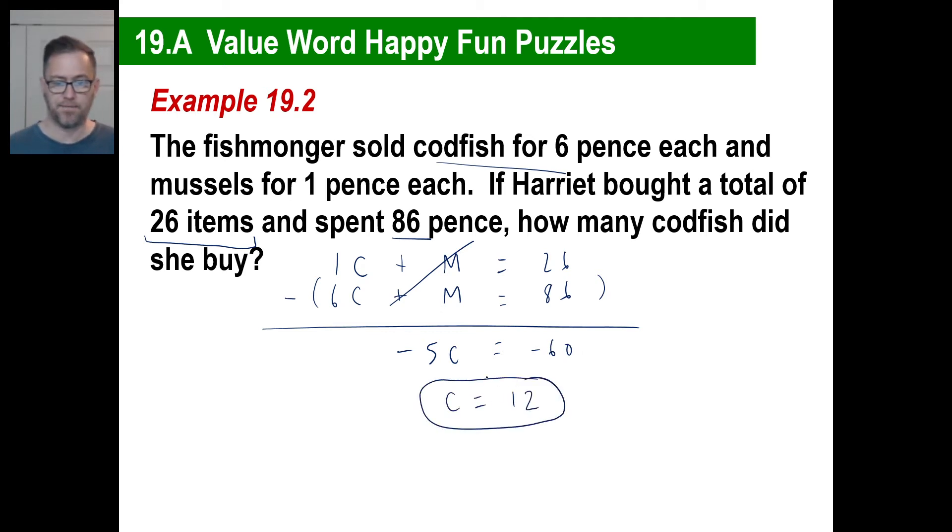So negative 5 goes into negative 60 12 times. That's good. And if the codfish, she bought 12 of them, she bought 26 total, which means she had to have bought 14 mussels. By the way, the cost, let's prove that we're right. Mussels, if there are one each, 14 times 1 is 14.